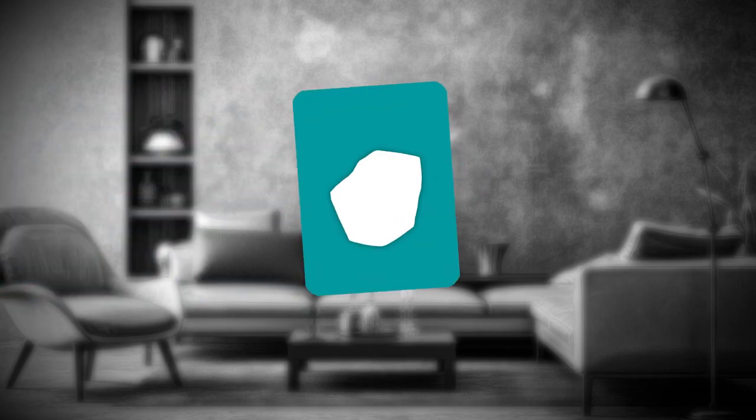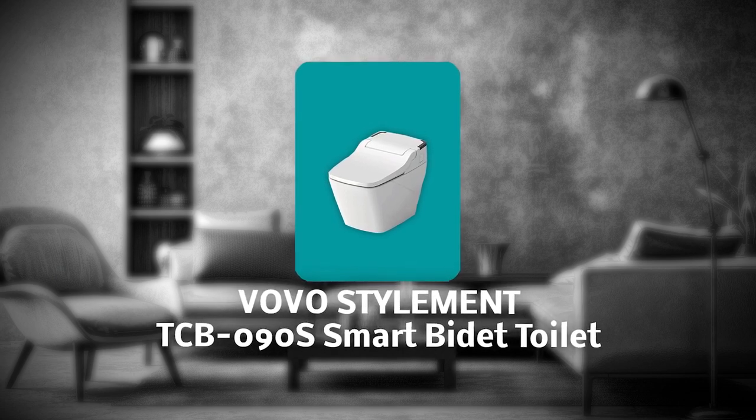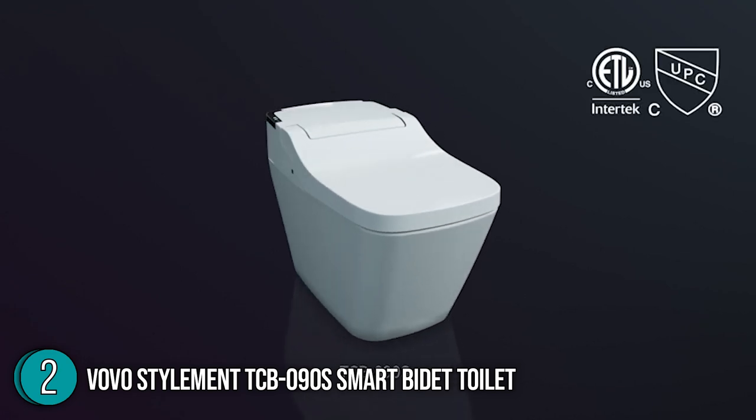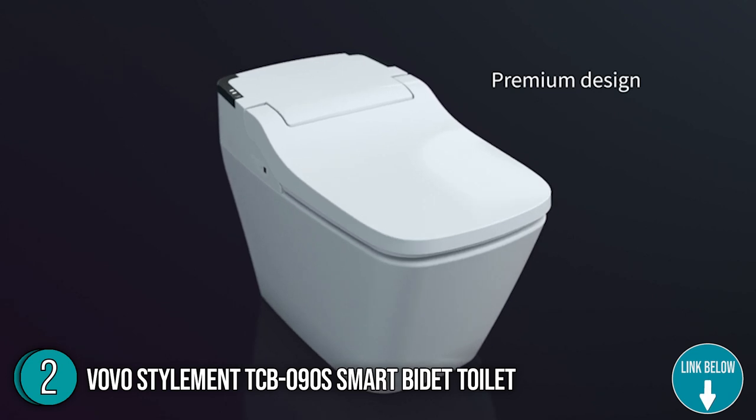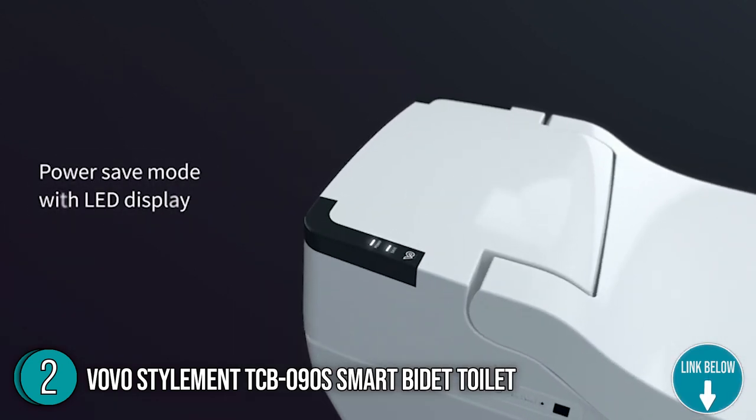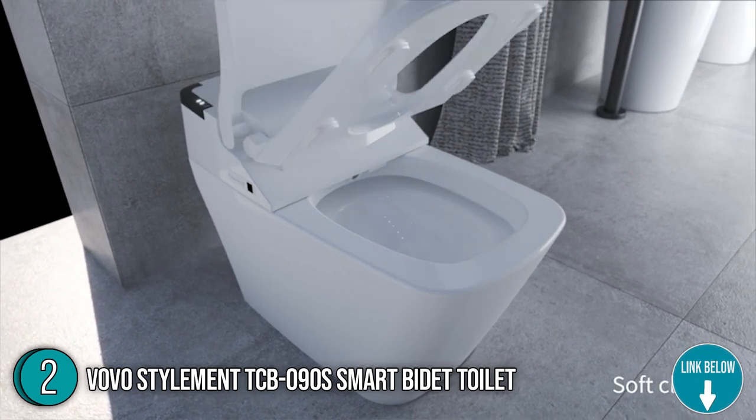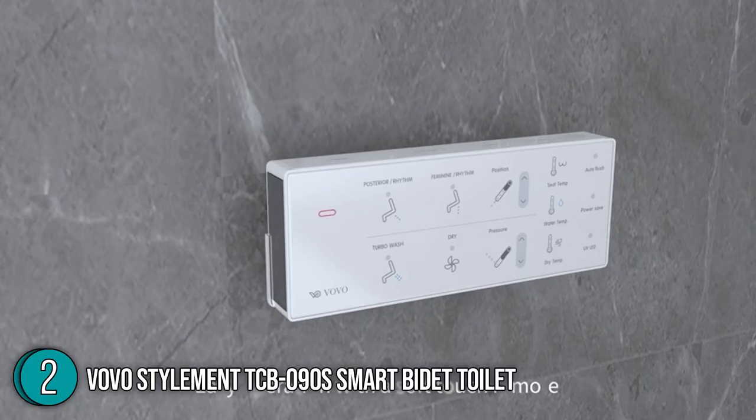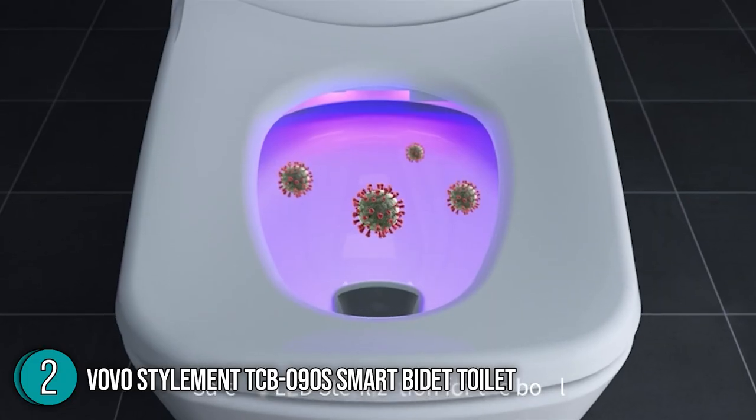The second best smart toilet on our list is the VOVO Stylement TCB090S Smart Bidet Toilet. The VOVO Smart Bidet Toilet is a fantastic representation of a modern, functional, and aesthetically appealing smart toilet. It is made of white stainless steel and has a UV-LED sterilizing light, making it a stylish addition to any modern bathroom. Its virtually cuboid shape, 114.8 lb weight, and dimensions of 28.3 x 16.1 x 21 inches do set it apart from other toilets.